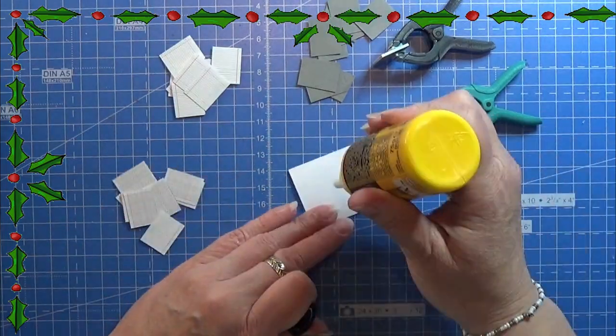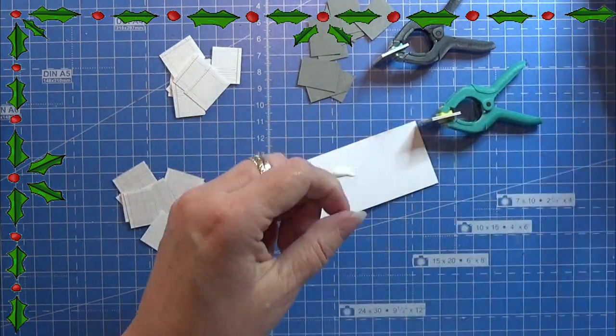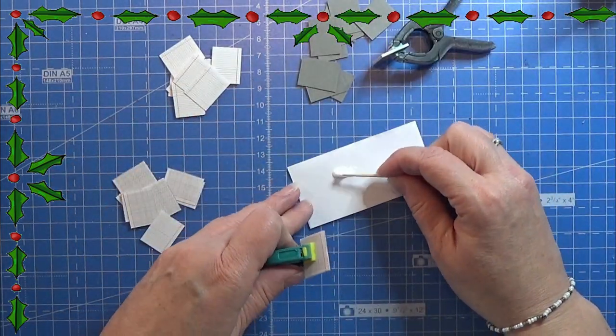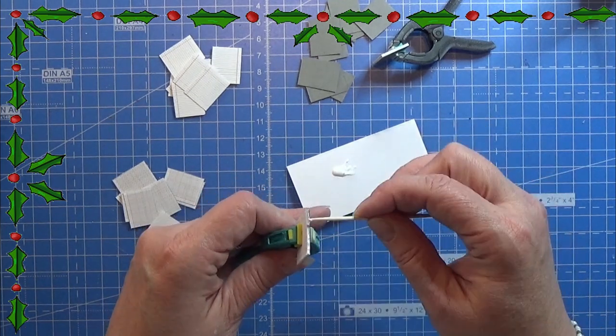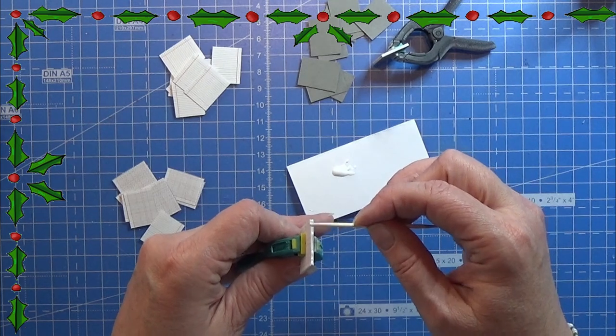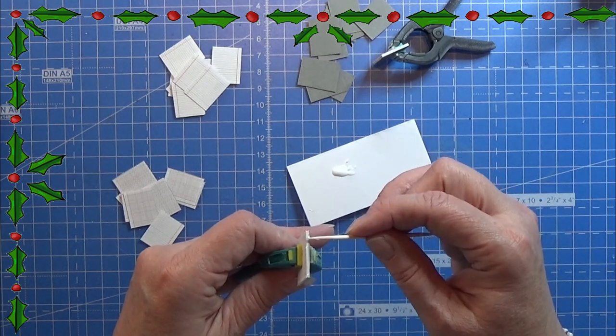Now I'm just going to take my glue and use a toothpick to go down the spine of this little notepad with some glue. I'm doing this on both of them, and then I will let them dry.